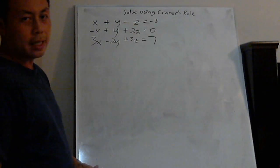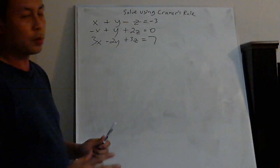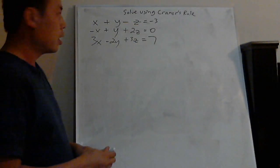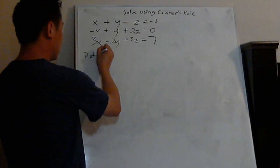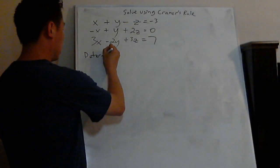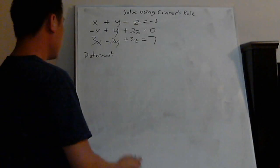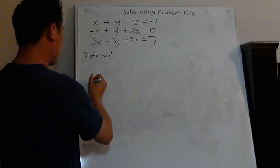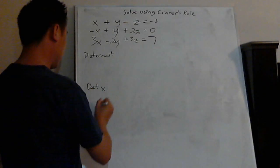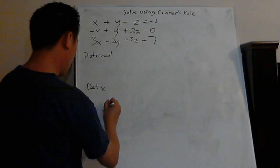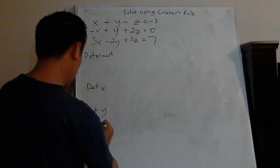The easiest way to do this is to lay it out. You need to find the determinant — what I call the main determinant. And then you also have to find determinant x, determinant y, and determinant z.